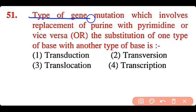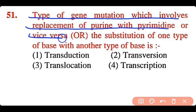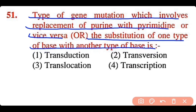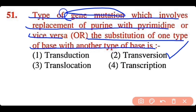Question 51: The type of gene mutation which involves replacement of purine with pyrimidine or vice versa is called: transduction, transversion, translocation, or transcription. The correct answer is option 2. Transversion is the type of gene mutation in which a purine is replaced by a pyrimidine.